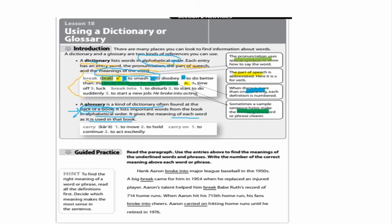Let's look at our glossary below. We have the word carry — just like our dictionary, the glossary has its pronunciation spelled out with special characters, and sometimes words have more than one meaning, so we have numbering of different meanings. Before we start guided practice, let's read our hint: to find the right meaning of the word or phrase, read all the definitions first, then decide which meaning makes the most sense in the sentence.